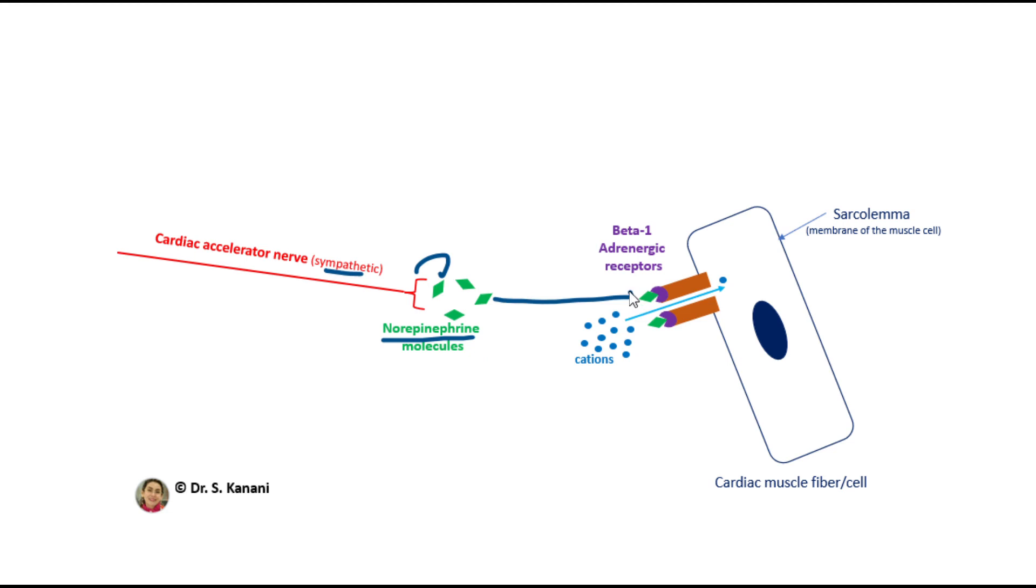Norepinephrine binds to receptors that we have in the sarcolemma, that would be the membrane of the muscle cell. In this case, the cardiac muscle cell. We name these receptors that cardiac muscle cells have in their sarcolemma beta-1 adrenergic receptors.